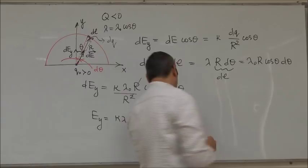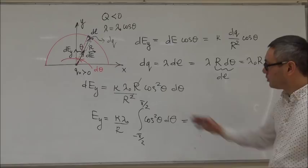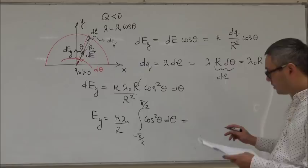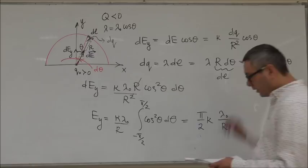Again, this is the kind of integral that we are not generally expecting you to be able to solve. So, you can work it out yourself just by looking at it from the table. But I'll just give you the final answer here. So, the final answer you get is pi over 2 K lambda 0 over R.